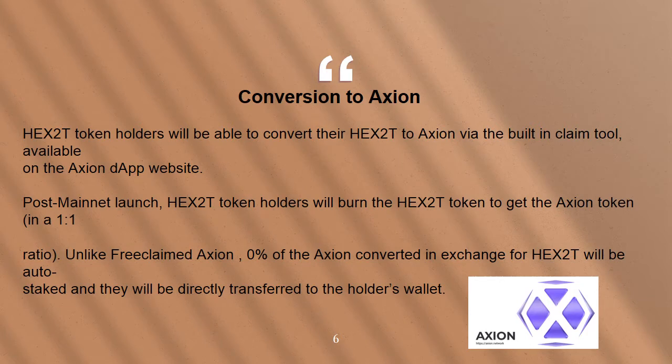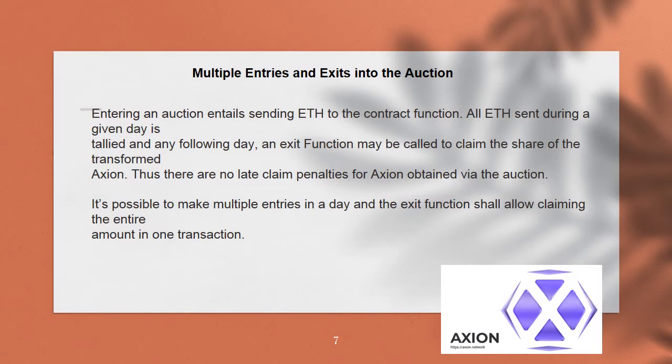Conversion to Axion. HEX 2T token holders will be able to convert their HEX 2T to Axion via the built-in claim tool available on the Axion DApp website. Post mainnet launch, HEX 2T token holders will burn the HEX 2T token to get the Axion token in a 1-to-1 ratio. Unlike free claimed Axion, 0% of the Axion converted in exchange for HEX 2T will be auto-staked, and they will be directly transferred to the holder's wallet.